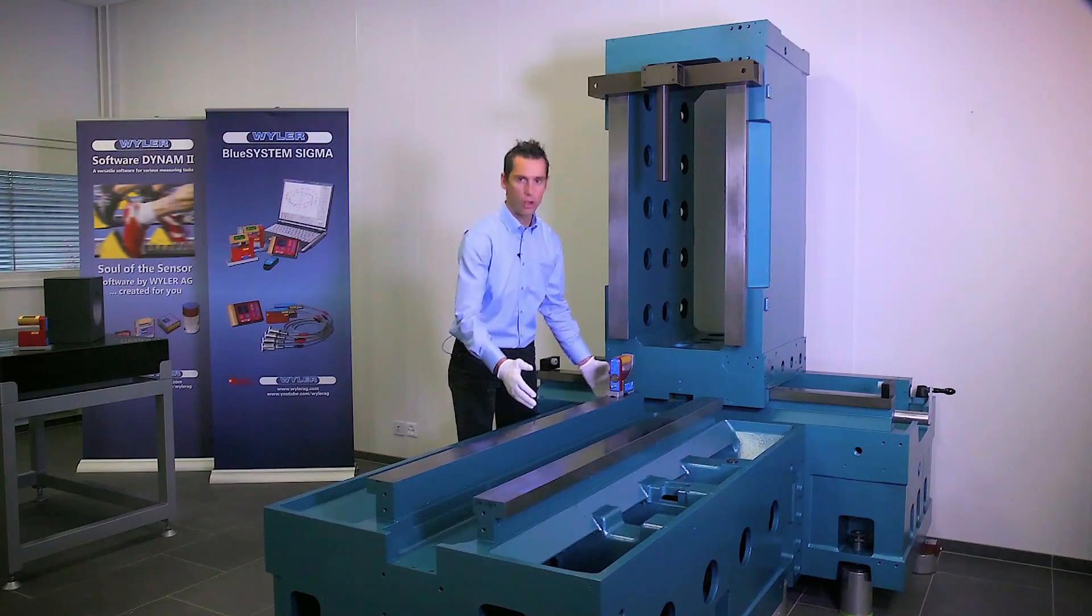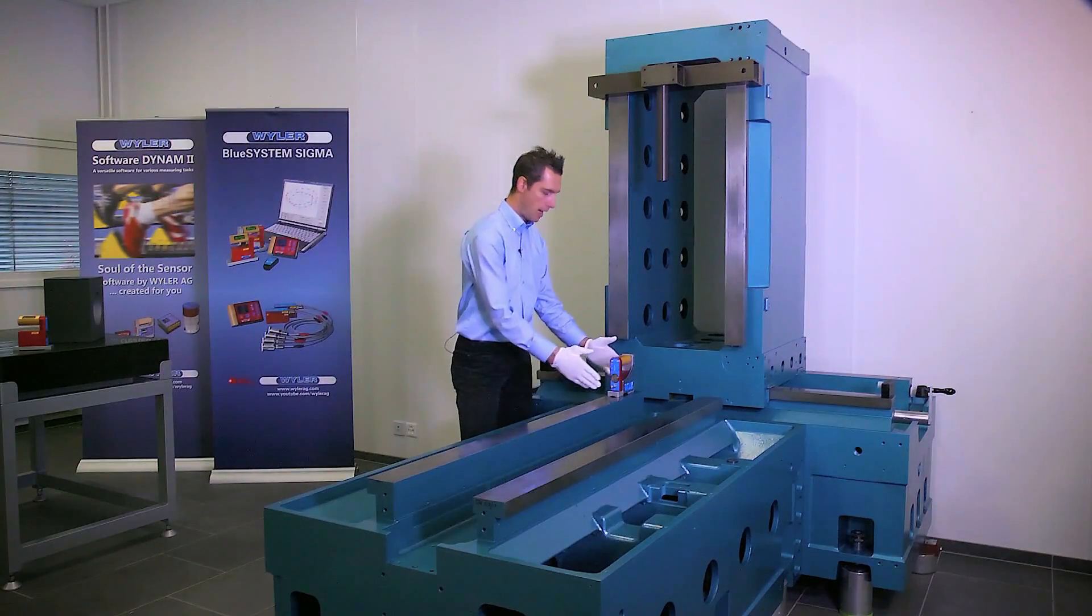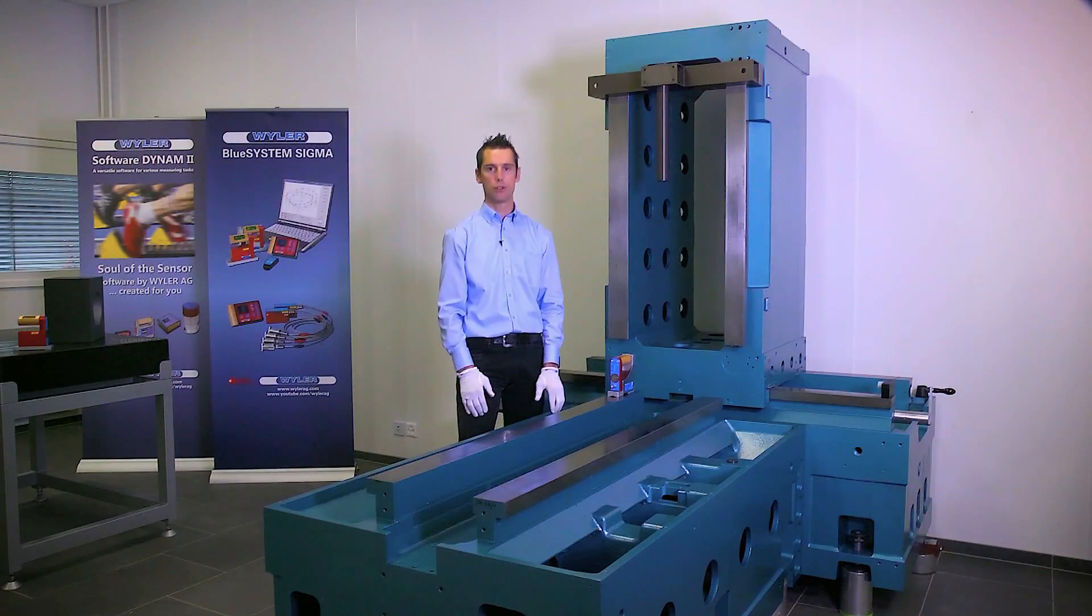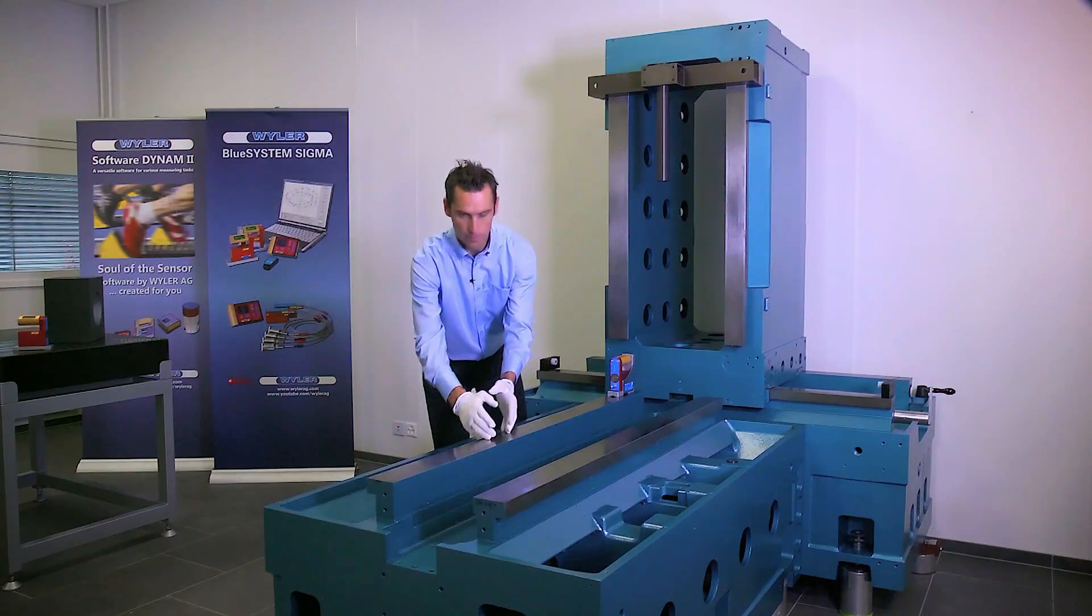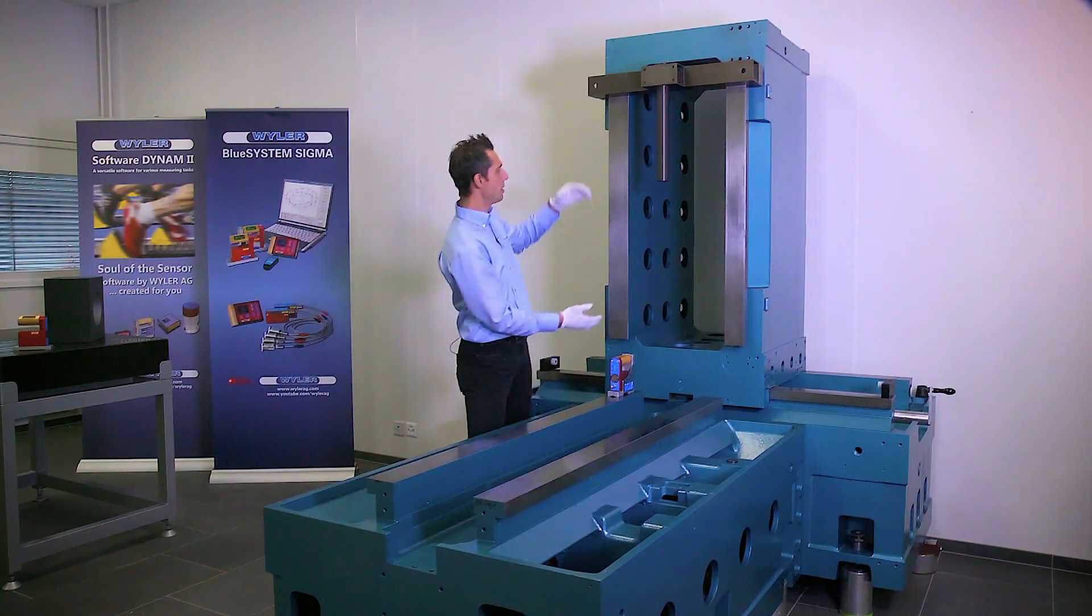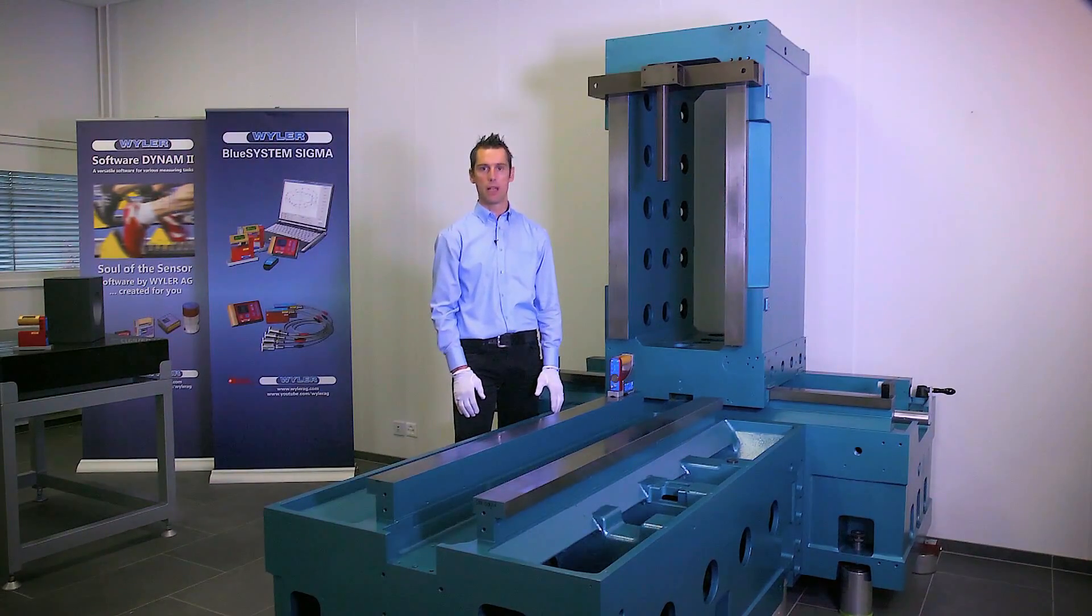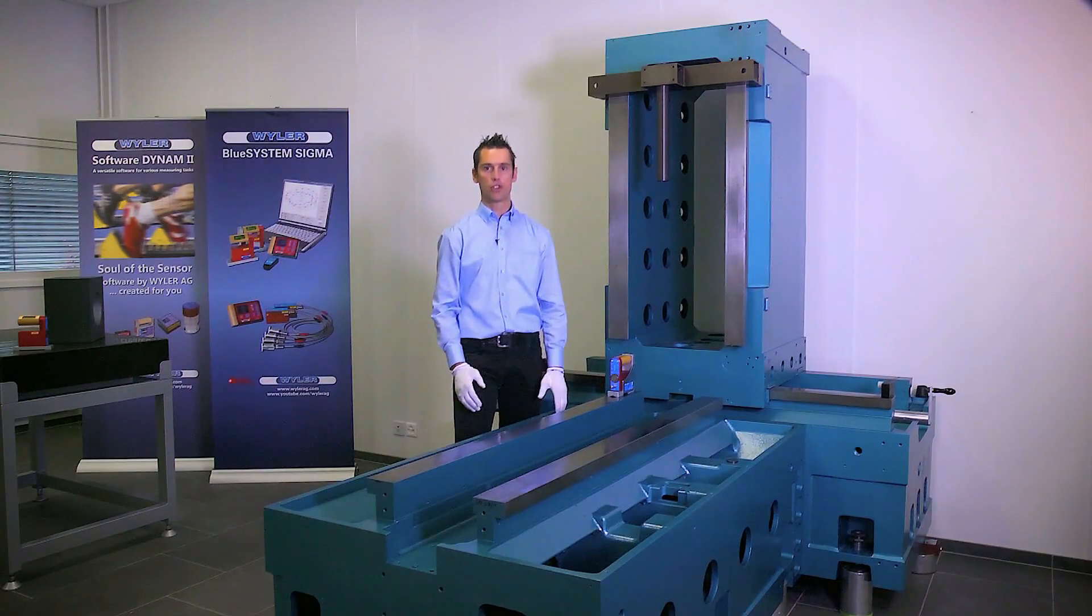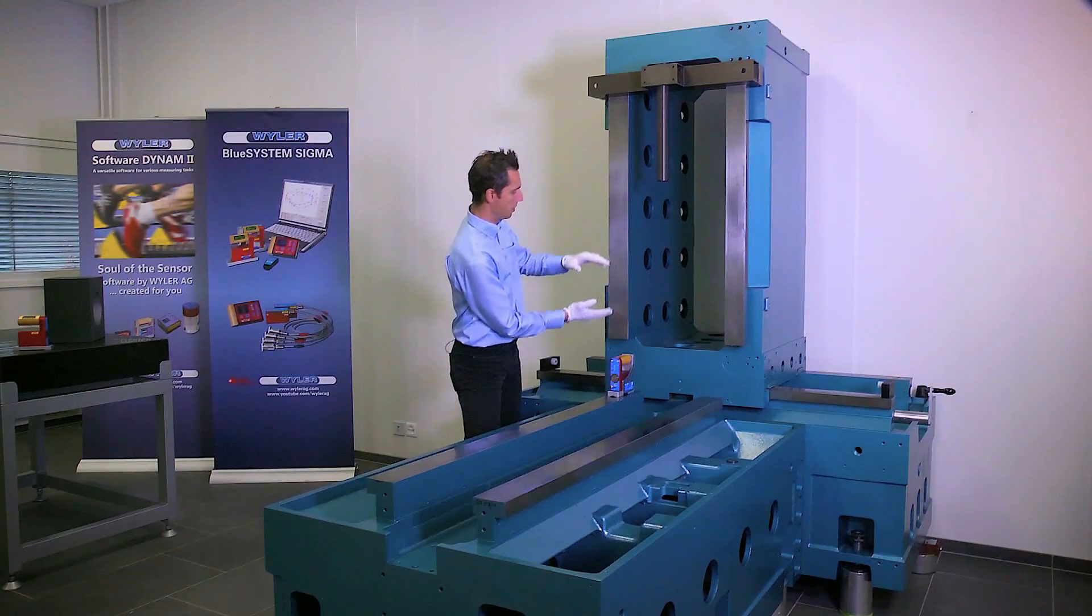The horizontal guideway has a length of 1125 millimeters with a base length of 150 millimeters, we will need nine measurements. The vertical guideway has a length of 625 millimeters with a base length of 150 millimeters and a step length of 125 millimeters, we will need five measurements.